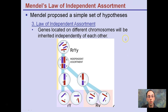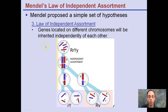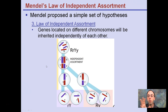Another law is the law of independent assortment: genes located on different chromosomes will be inherited independently from one another. If you have a gene on chromosome 1 and chromosome 9, they're going to be inherited independently of one another. All the genes located on chromosome 1 will be moved over, and chromosome 9 will be moved separately — assorting things in an independent and often random way.